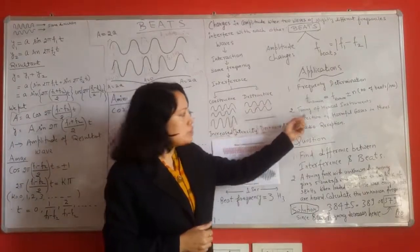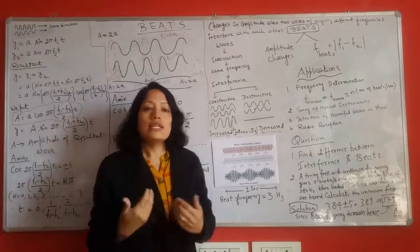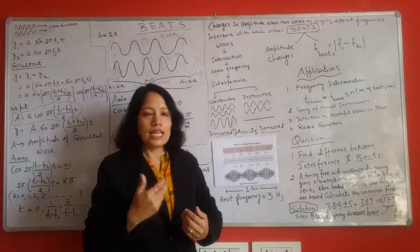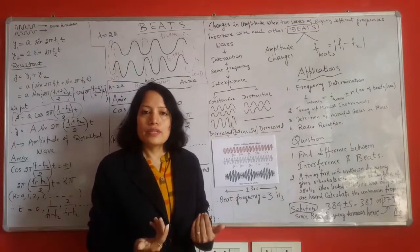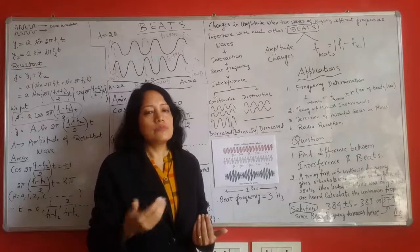Second application is tuning of musical instruments. If two different musical instruments has to be perfectly in tune with each other, then they are sounded together. If beats are produced it means that they are not perfectly in tune. It is easy to get them in tune by just removing the beat sound.